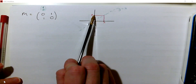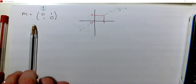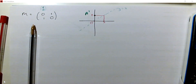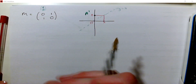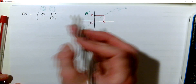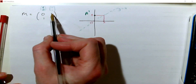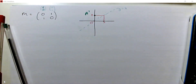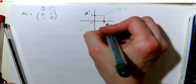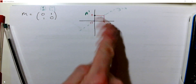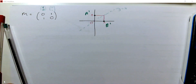So 1, 0 will come over here to 0, 1 — shown as dashed. And the point 0, 1, which is my point B here, is being transformed to 1, 0, which is over here. So A and B have swapped places, and it's a reflection in the line y equals x.